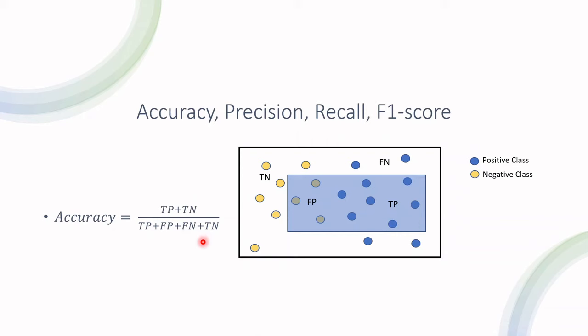Moving forward, let's talk about precision. Precision is defined as true positives divided by true positives and false positives — whatever is inside this blue rectangle. Trying to put that into words, it's how well did your model perform regarding its prediction of the positive class?